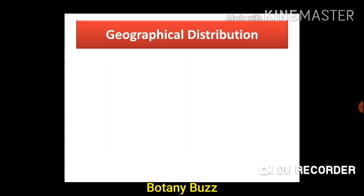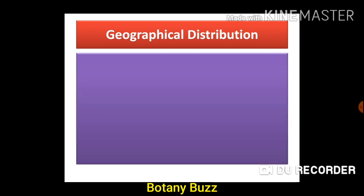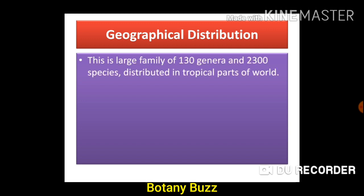Let us learn about the geographical distribution of family Annonaceae. This is a large family of 130 genera and 2300 species which are distributed in tropical parts of the world. Tropical means the regions near the equator where the temperatures are warmer.